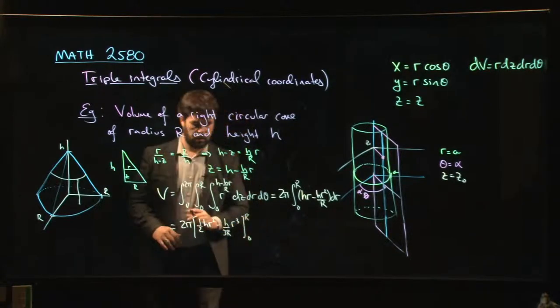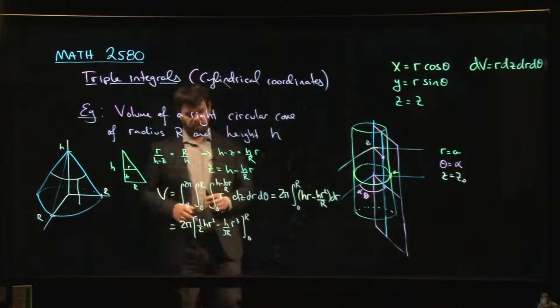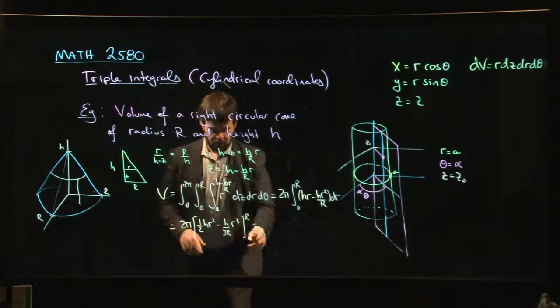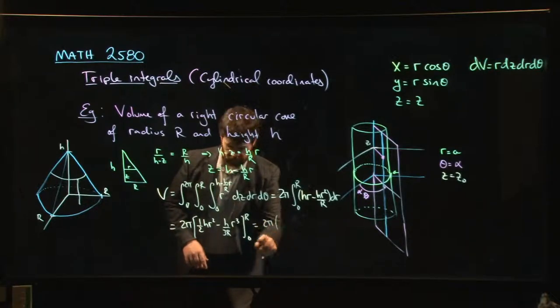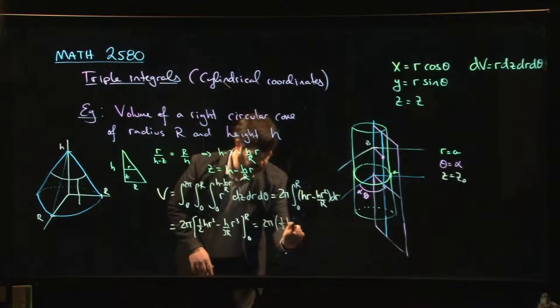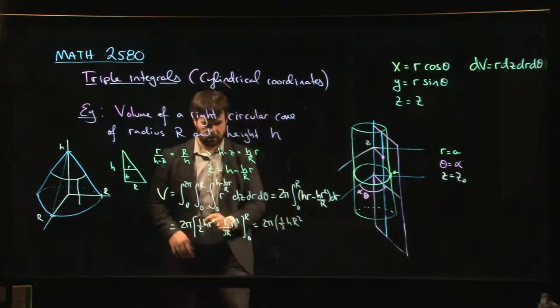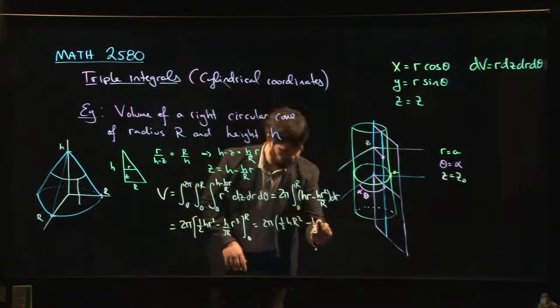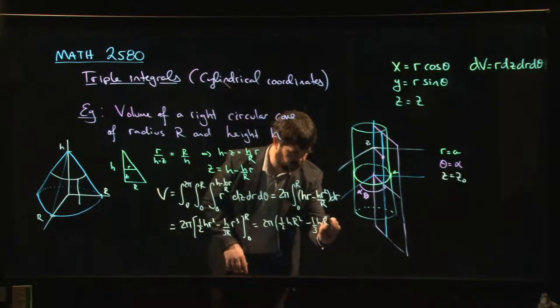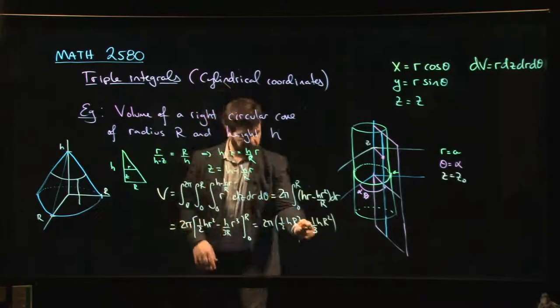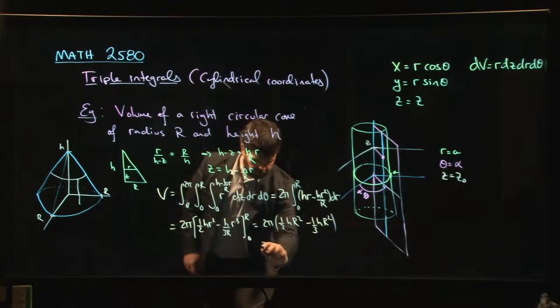We're going to do that whole thing from 0 up to big R. So I have 2π times one half H big R squared minus, let's see, one sixth of... well, 1/6 times 2 times 1/2 minus 1/6 times 2 is 1.